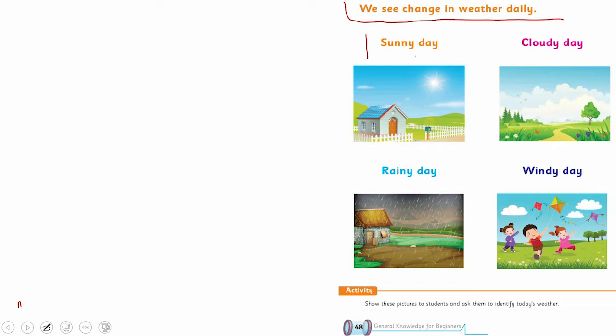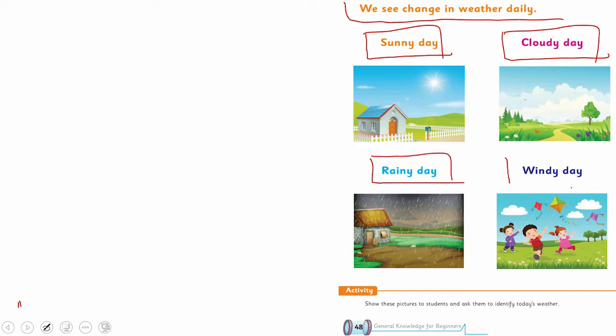Sometimes I will show you some pictures and you will tell me: is that a sunny day, a cloudy day, a rainy day, or a windy day? Yeh char kisum ke weathers aapko Pakistan mein nazar aate hain. Aap logo ne picture dekh ke mujhe batana hai aur usse related characteristics bhi batani hain.